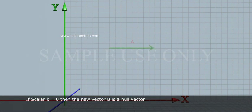If scalar K is equal to 0, then the new vector B is a null vector.